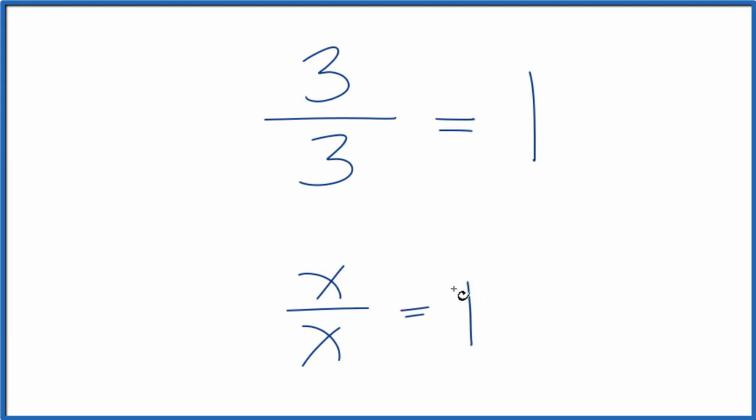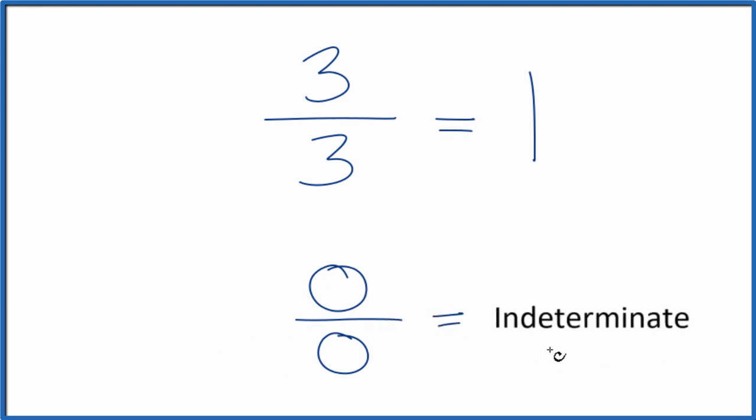There is one exception, though. You know what it is? If we take 0 divided by 0, that does not equal 1. We say 0 divided by 0, that's indeterminate. And that means it doesn't really have a definite or a definable value. So that's one big exception to be aware of.